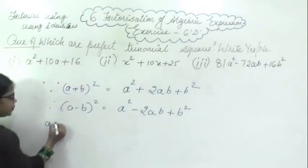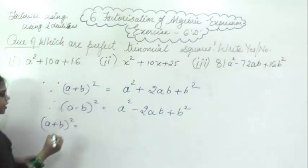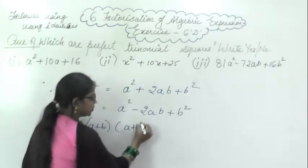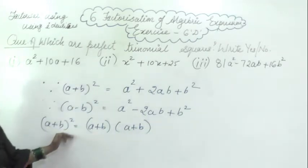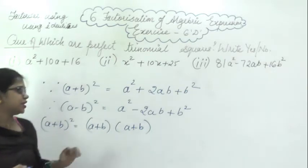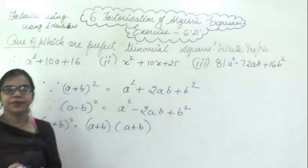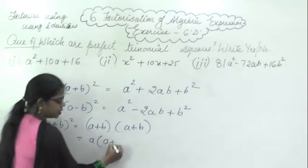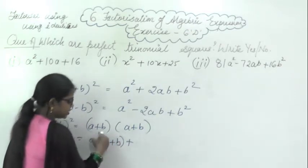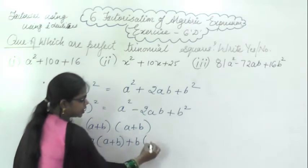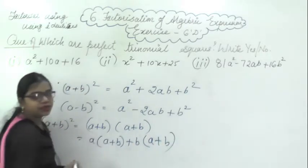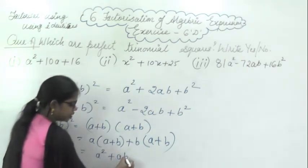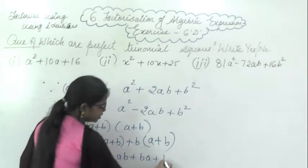Like this — A plus B whole square means you can write down this as A plus B into A plus B. On solving this you will get A multiplied with A giving A square, plus AB, plus BA, plus B square. So you will get A square plus 2AB plus B square.